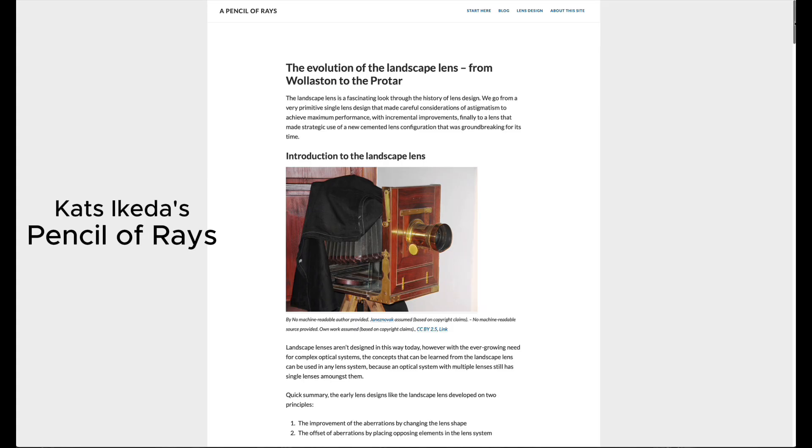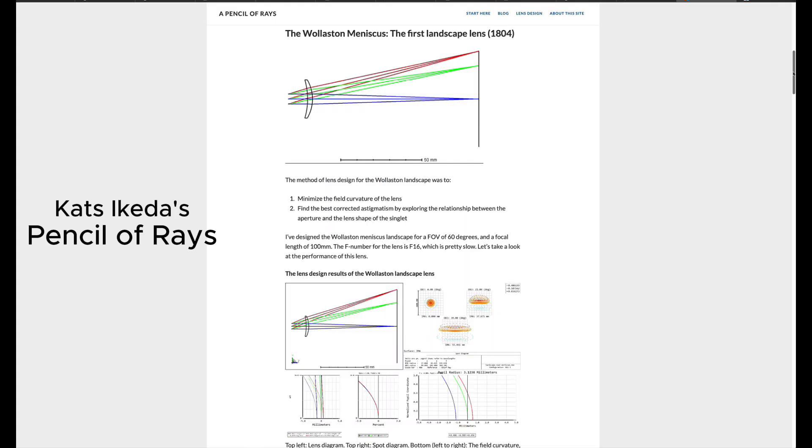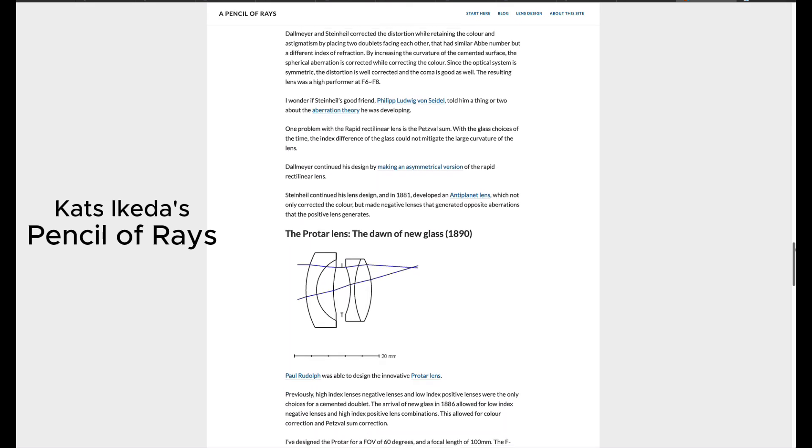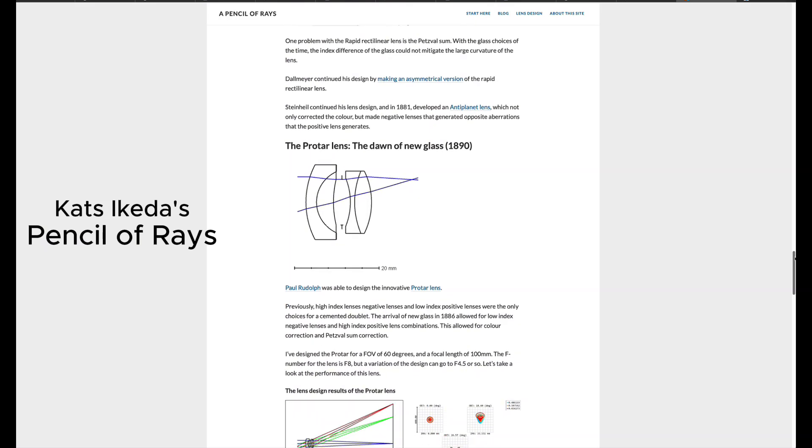Pencil of Rays has an awesome article on the evolution of this design. It describes some of the major innovations in landscape lens design and how they help reduce aberrations. The link's below.